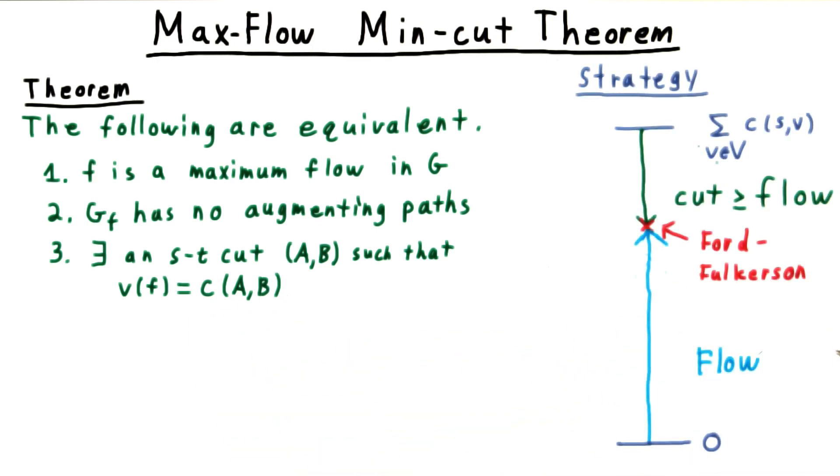This is the realization of the strategy outlined earlier, where we were going to introduce the notion of a cut, show that it served as an upper bound on the flow, and then show that Ford Fulkerson produced a flow with the same value as a cut.